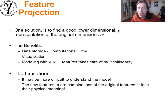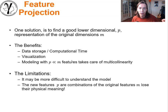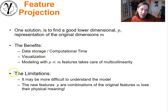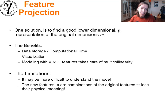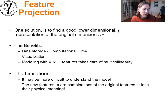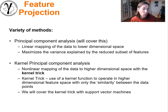The limitation is that the new features may be more difficult to understand. You had porosity, permeability, vitrinite reflectance, impedance, and so forth — now you have component one, two, three, and four, which are combinations of the original features and lose their physical meaning. That's a significant drawback. From the workflows we're about to present, we do the statistics and machine learning in the lower dimensional space, but we always come back — because at the end of the day, you have to model with permeability, porosity, and so forth. You can't model with those abstract components.